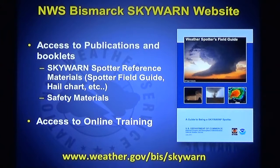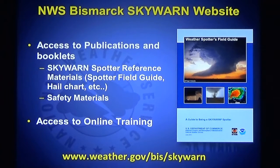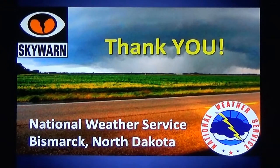The National Weather Service SkyWarn website is available off of our main page. The National Weather Service webpage out of Bismarck is weather.gov/BIS, or you can spell Bismarck out. If you follow that URL with the word SkyWarn, you'll get to our SkyWarn training page, where we have a lot of information available, including the Weather Spotters Field Guide, hail charts, wind charts, and a lot of safety material. Thank you so much for watching this segment, and I urge you and your family to stay weather ready.